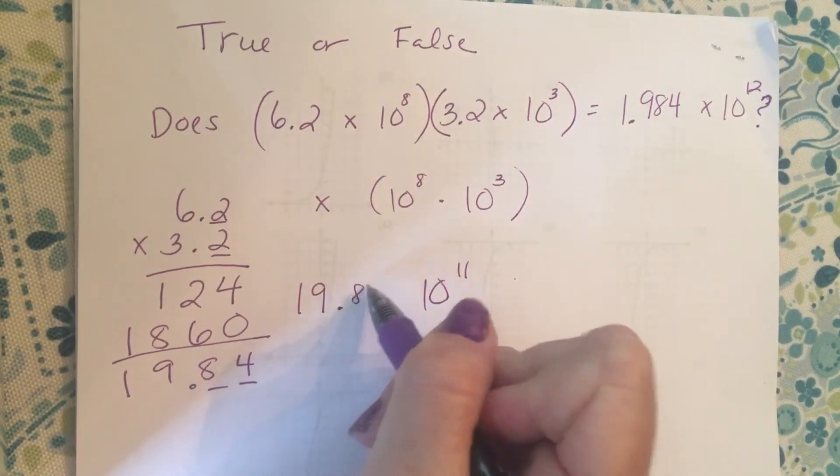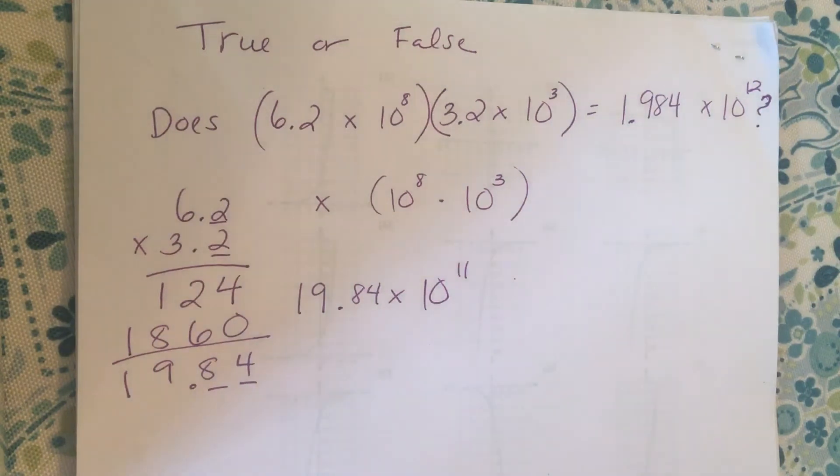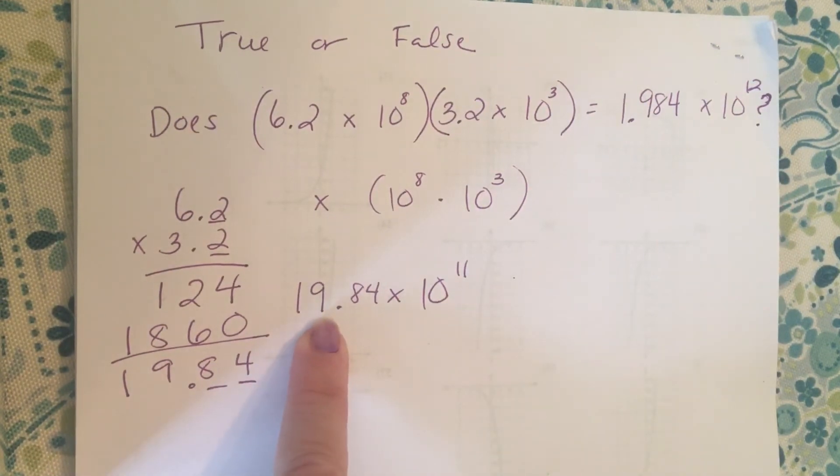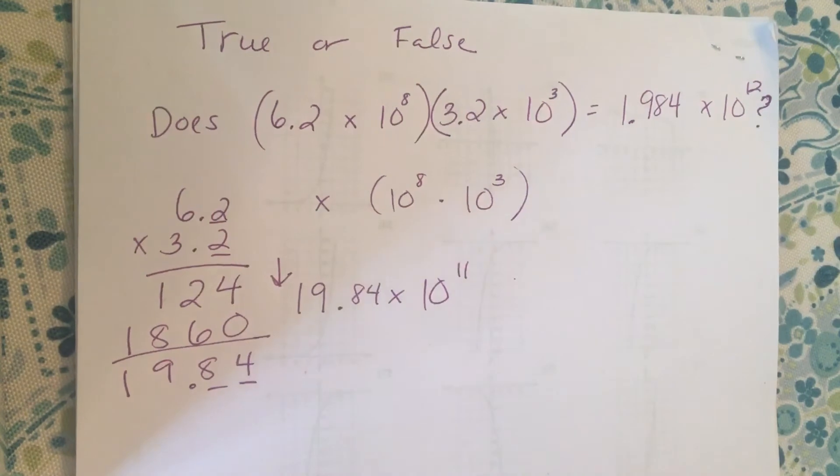So right now I have 19.84 × 10¹¹. This is a great answer, right? It's not in scientific notation, and it's not in scientific notation because this number is greater than ten. So I need to divide it by one more power of ten. We talked about in our Google Meets this week these little arrows might help us.